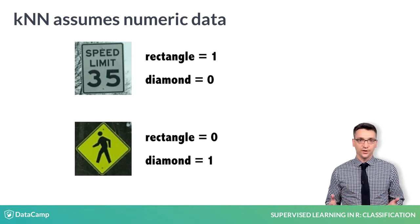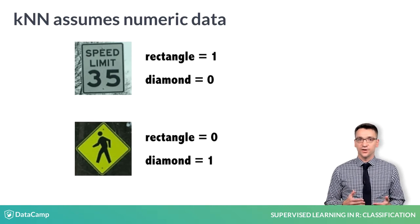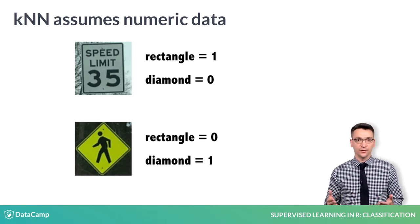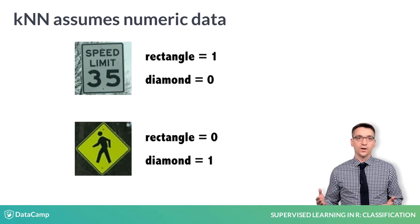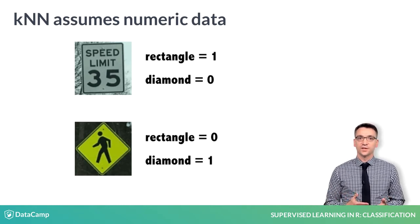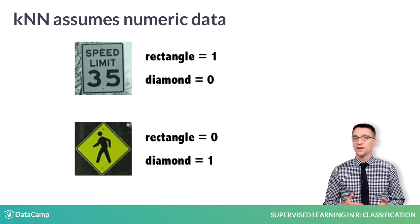A binary dummy variable is created for each category except one. This variable is set to one if the category applies and set to zero otherwise. The category that is left out can be easily deduced. If the stop sign is not a rectangle or a diamond, then it must be an octagon.